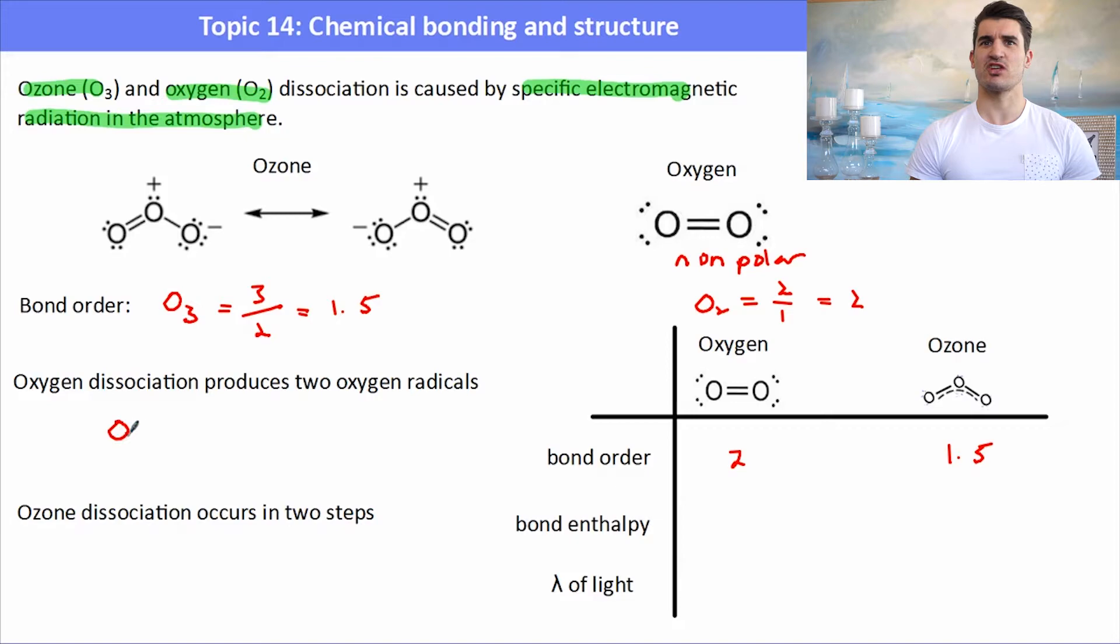Oxygen dissociation produces two oxygen radicals. We have our O2 gas which forms two oxygen radicals. Remember an oxygen radical has a lone electron so that's why it's got the dot. That bond enthalpy or the energy required to break that bond is 498 kilojoules per mole. That is a wavelength of light of approximately less than 242 nanometers. That means it needs quite an energetic light to break that bond.